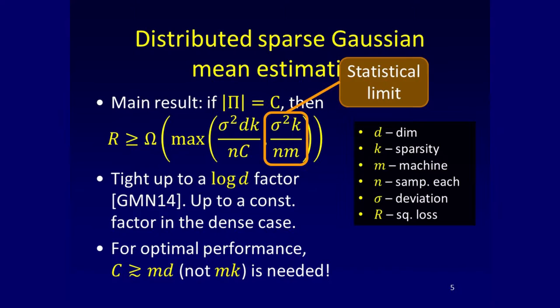The bound is a maximum of two terms. One term goes down with C — the amount of communication in the protocol. If I bound communication by C, that term decreases, but the error cannot go all the way to zero. The second term is the statistical limit. So up to a certain point, communication is the bottleneck. After that, with enough communication, more communication is not useful.